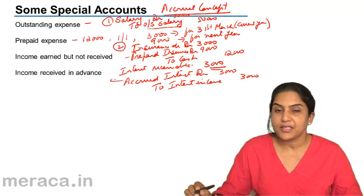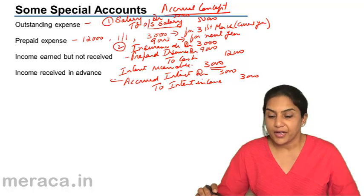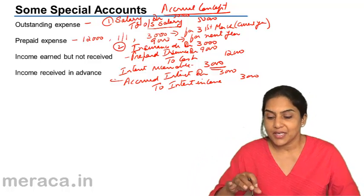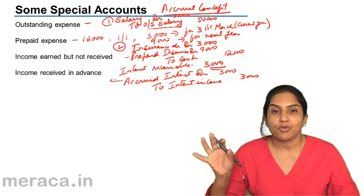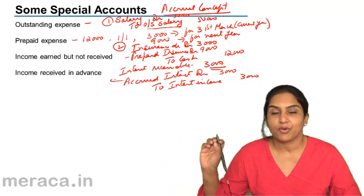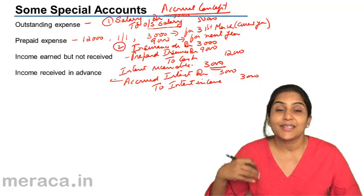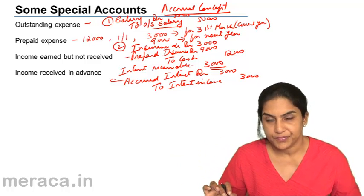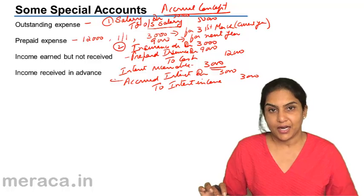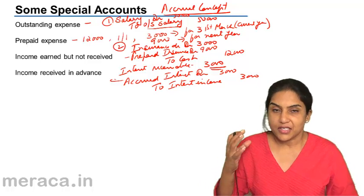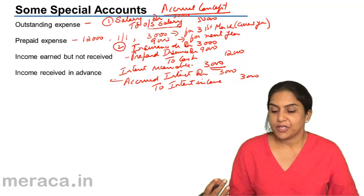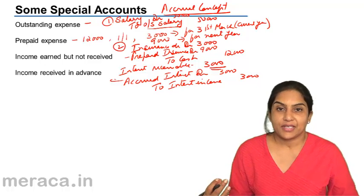What is accrued interest? Accrued interest is a representative personal account representing the account of the investment company, the bank, or whoever this interest is due from. It is called a representative personal account. It's a receivable account and therefore an asset account. The asset account is debited to interest income.